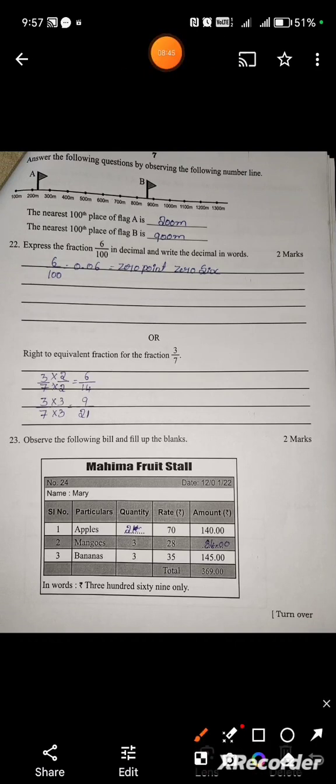Answer the following question by observing the number line. Flag A and flag B. The nearest hundredth place of flag A is between 200 to 300, nearest to 200 meters. Flag B is between 800 to 900, nearest to 900 meters.